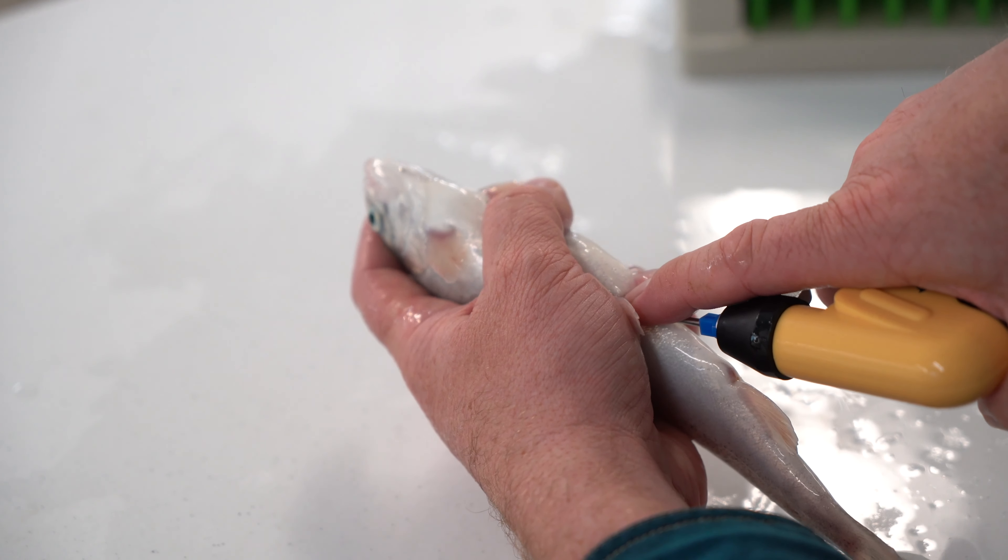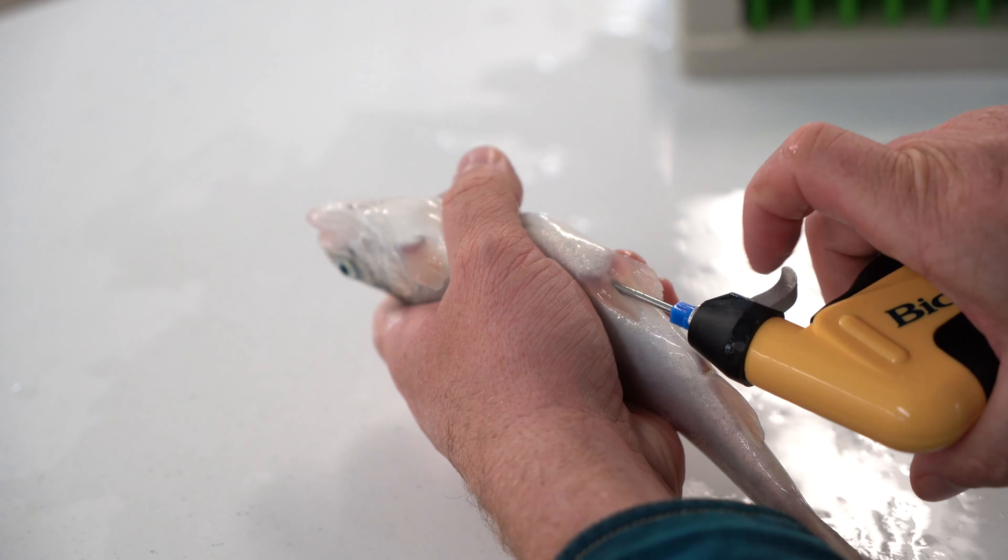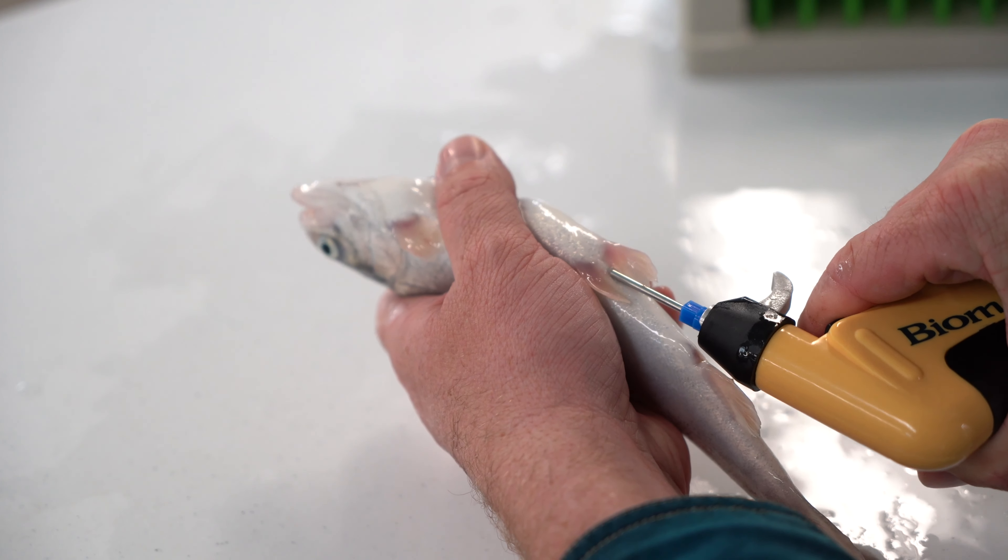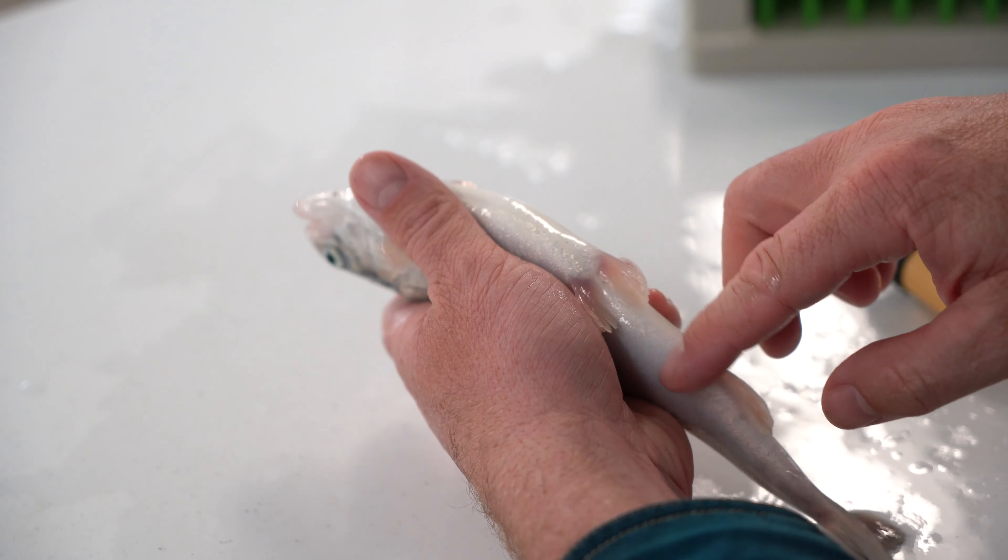After initial insertion, move the needle parallel to the body of the fish. The depth of needle penetration will typically vary between 1.5 and 2.5 centimeters depending on fish size.